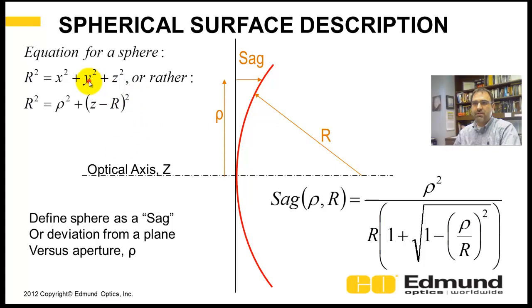Let's start with a spherical surface description. Generally, a spheroid is r² = x² + y² + z², or rather, we can combine x² + y² as an aperture squared, and you really need to include an offset for the radius.